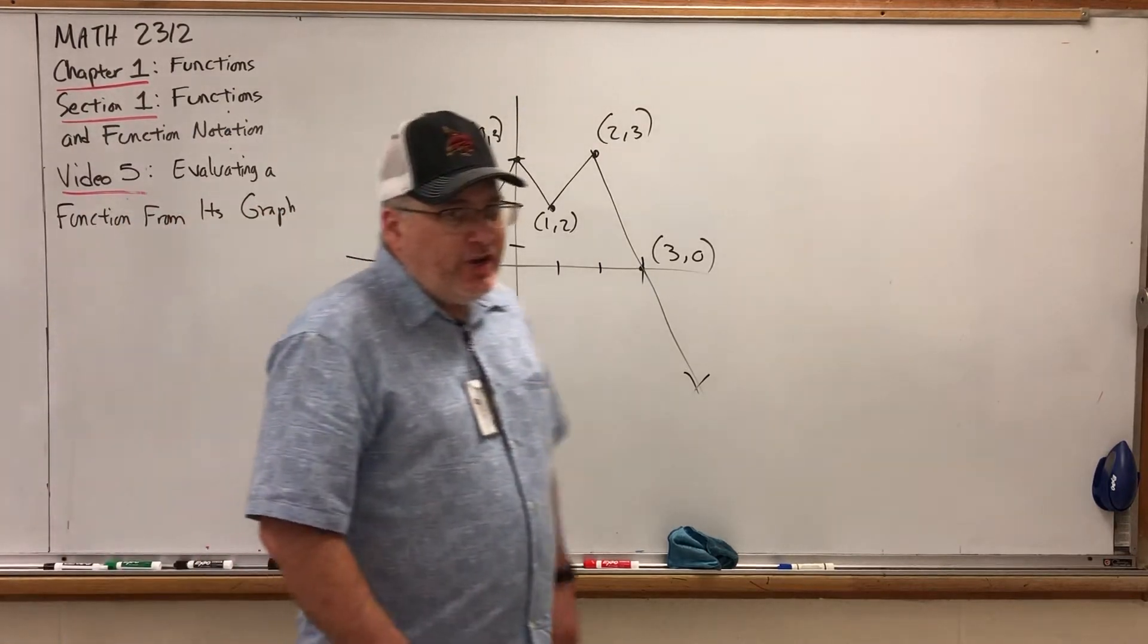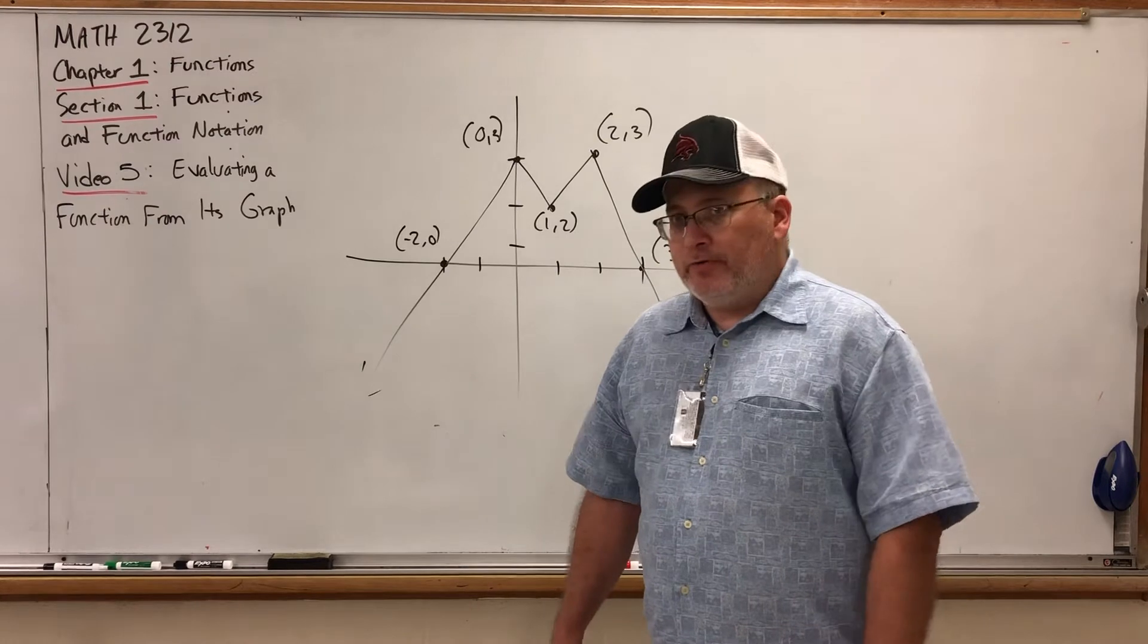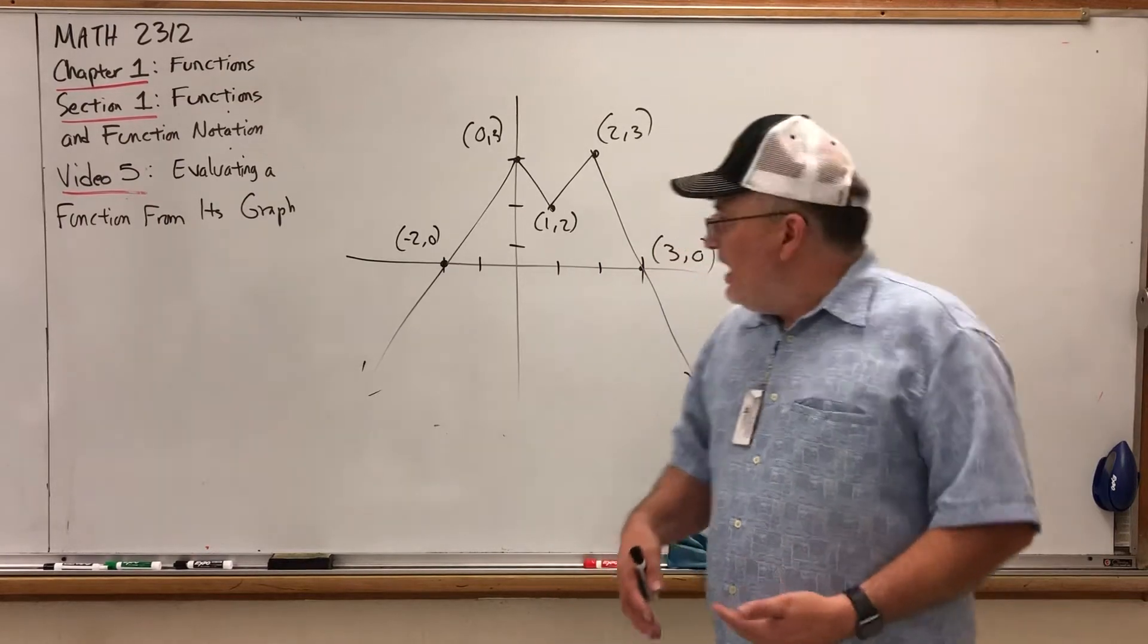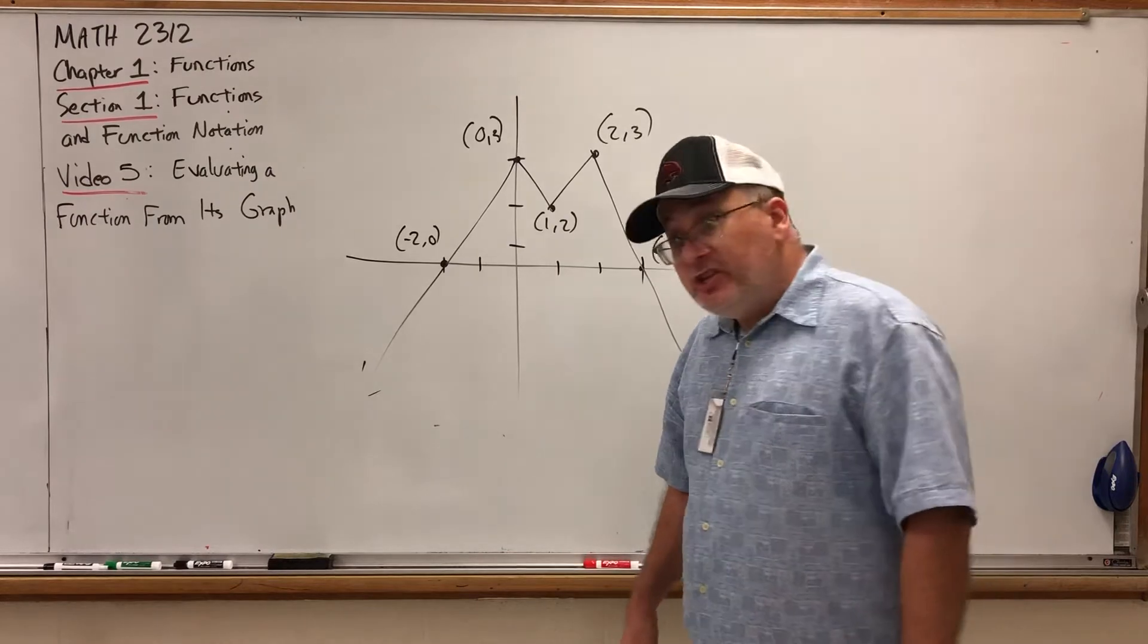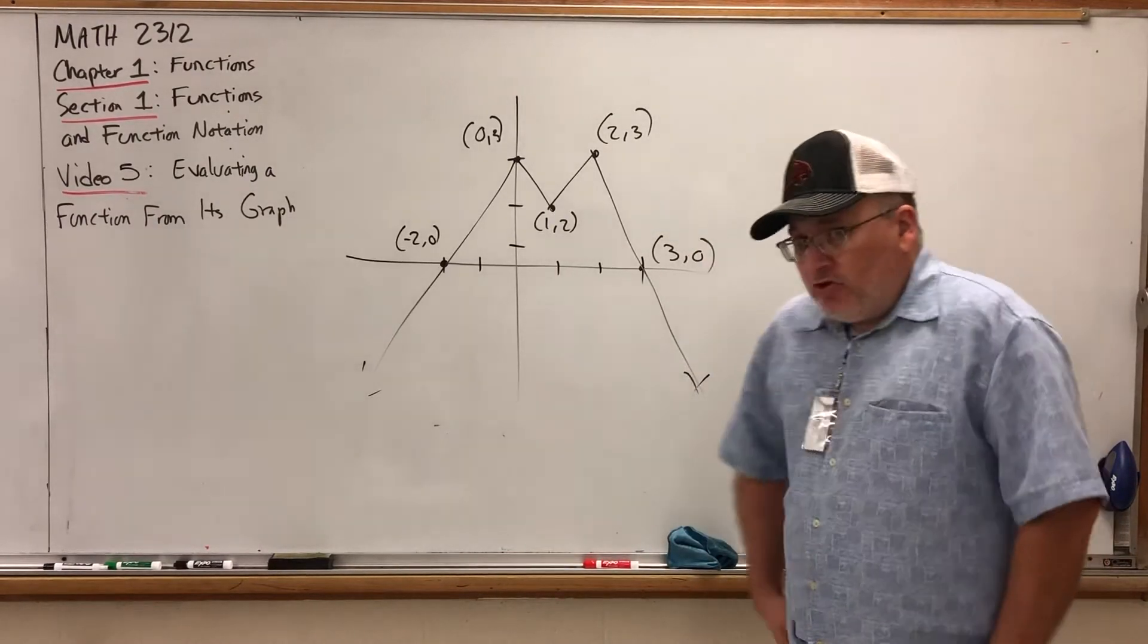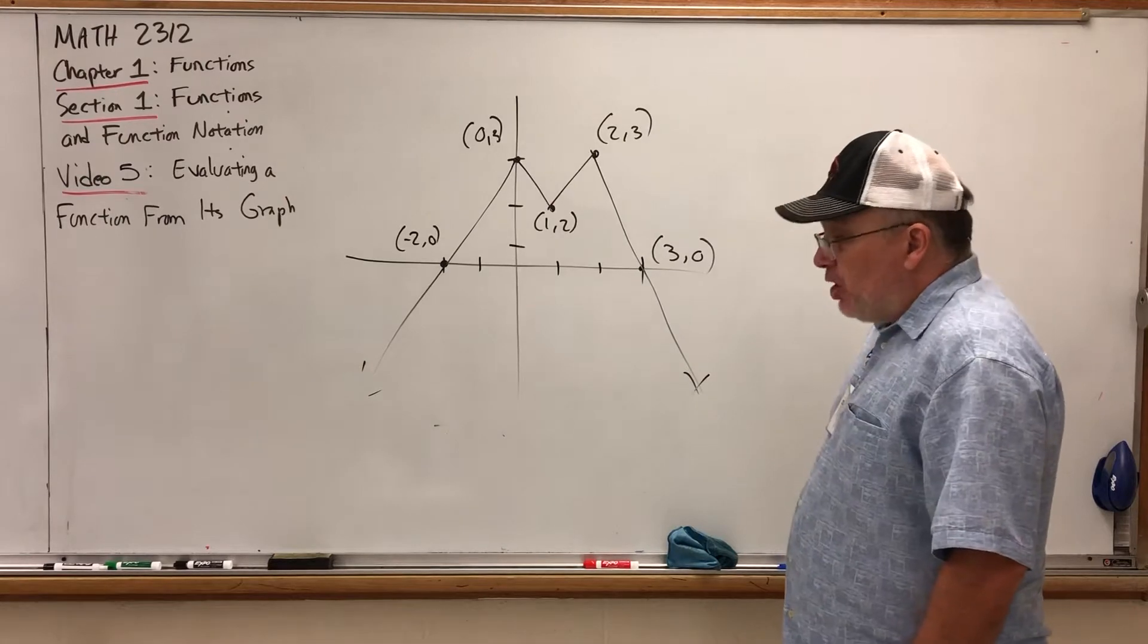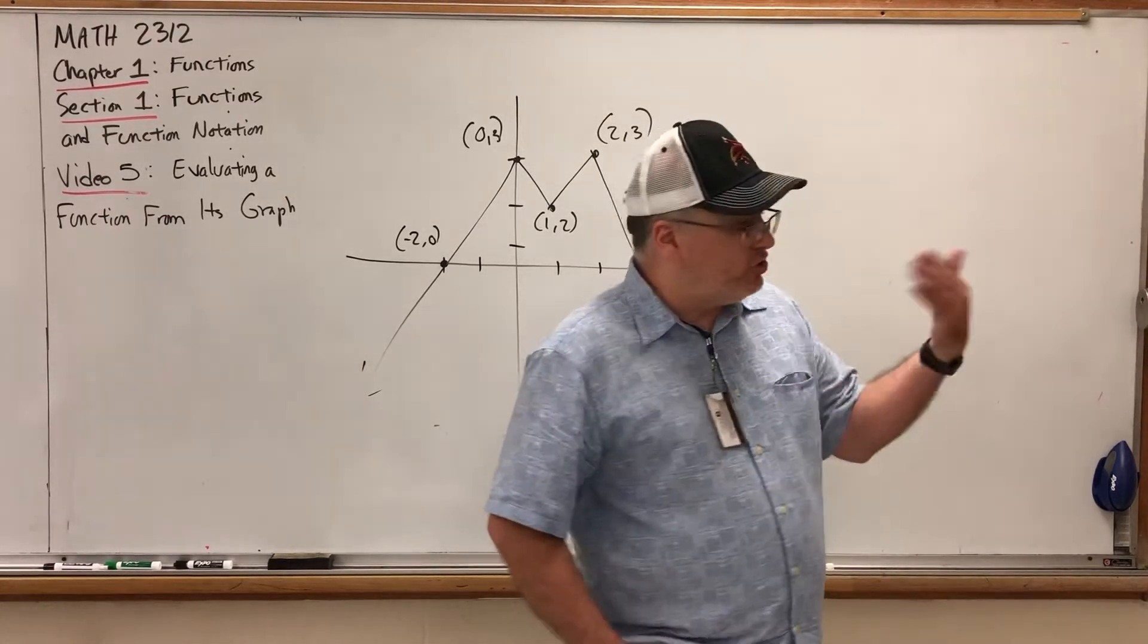In the previous video, I showed you a very, dare I say, elementary approach to graphing functions by manufacturing several ordered pairs, plotting them on a coordinate plane, and then finding the graph by connecting the dots smoothly and continuously as necessary. Forwards, we start with a function, put values in to get values out to create dots to draw a graph.